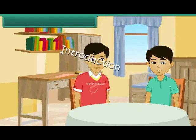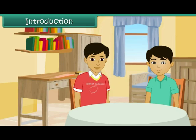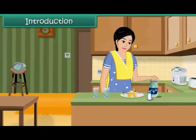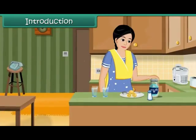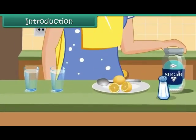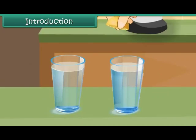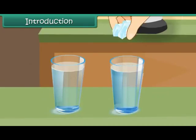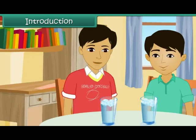Tarun is at his friend Kunal's place. Kunal's mother is preparing some lemonade for him. She squeezes some lemon juice in a glass of water, adds sugar and ice cubes, and serves it to him.